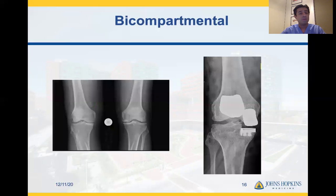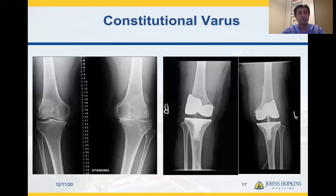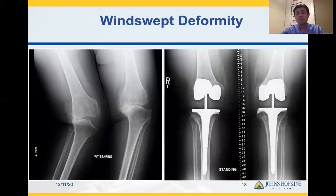In the patient with a bicompartmental arthritis model, I'd like to do a simultaneous bicompartmental arthroplasty in the medial or lateral compartments coupled with the patellofemoral compartment. In a patient who is an athletic soccer player or any other athlete with constitutional varus, I like to preserve that varus by means of my implant, which achieves some degree of joint line obliquity. And finally, with a patient with a windswept deformity, I like to preserve the mechanics by bringing them back to their mechanical alignment.